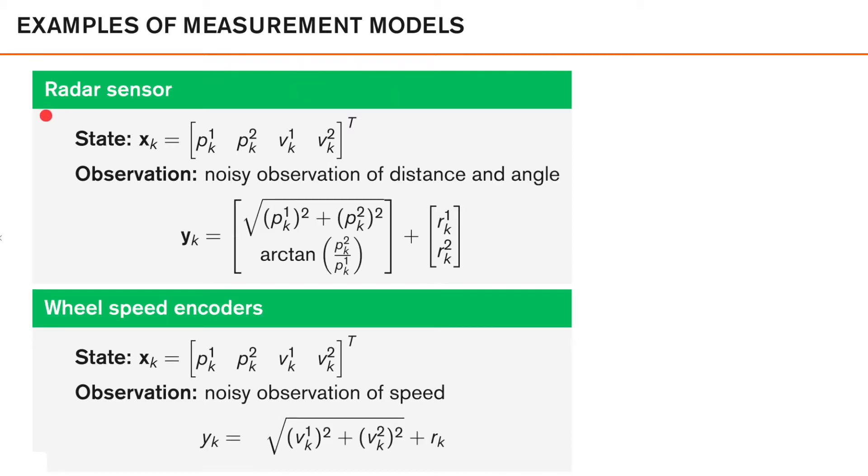As a third example, you can imagine that we have a radar sensor that observes the distance and angle to an object. Again, the expression for the measurement model depends on how we parametrize our state vector, and the choice of parametrization can actually be important in many applications. In this case, let's assume that the position and velocity of the object that we are interested in positioning is expressed in a coordinate system such that the origin is in the middle of the radar sensor.